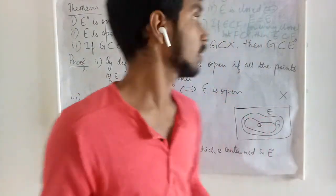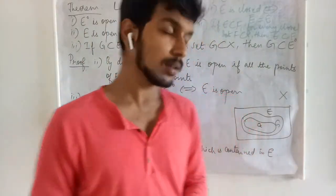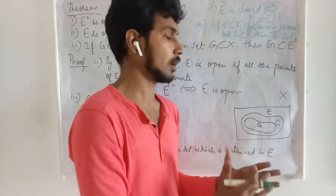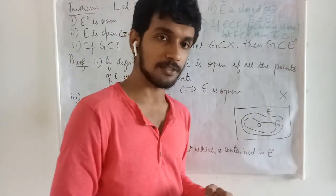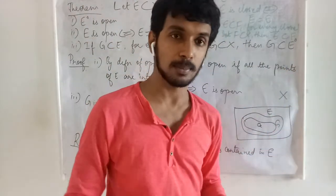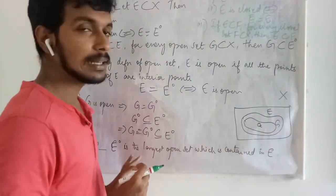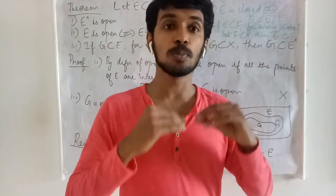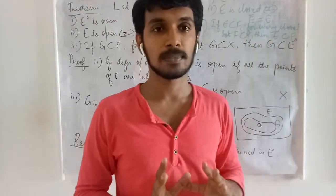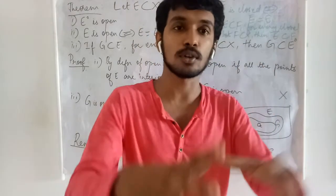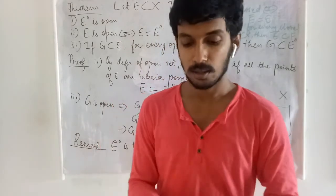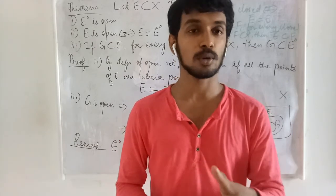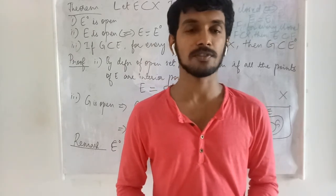These results can also be stated as: if you collect all open subsets of E and take their union, you obtain E⁰. Dually, if you collect all closed supersets of E and take their intersection, you obtain the closure of E. This concludes the lecture. If you have any queries, post them in the comment section and they will be clarified within 24 hours. Thank you for watching.